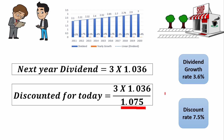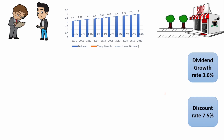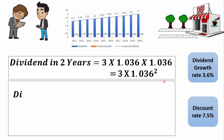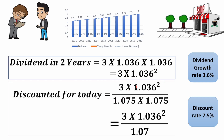This is for next year, but what about 2 years from now? The dividend in 2 years from today is going to be $3 multiplied by 1.036 twice — that is $3 multiplied by 1.036 to the power of 2. For the discount, we should discount back to today, so we discount twice: once for the first year and once for the second year. We come up with the discounted value for today of $3 multiplied by 1.036 to the power of 2, divided by 1.075 to the power of 2.